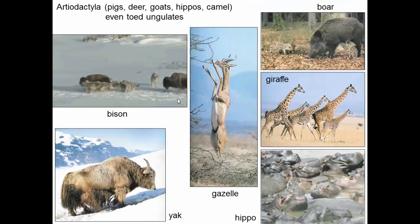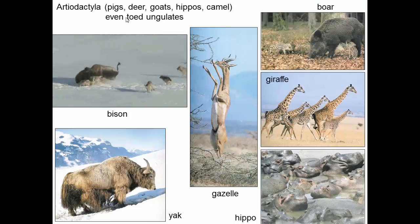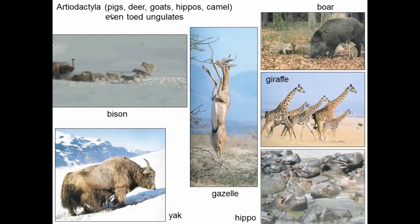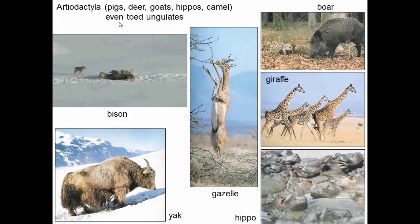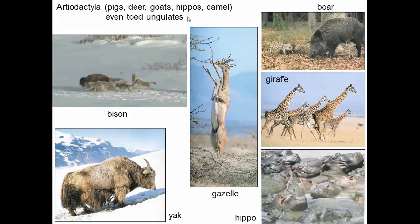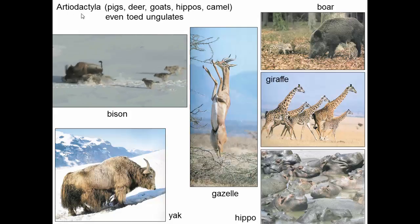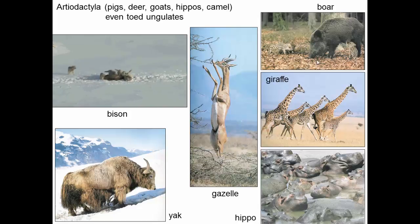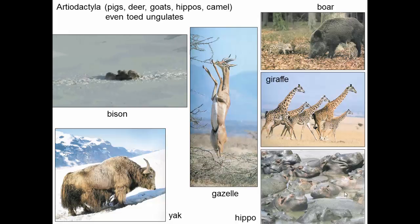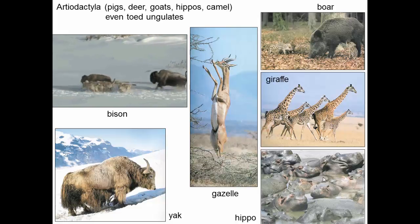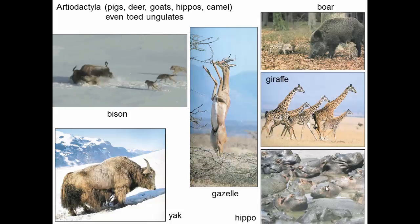The closest relatives of cetaceans are artiodactyls, which include pigs, deer, goats, hippos, and camels — ungulates with an even number of toes. So when you think of hoofed animals, as long as you're not thinking of a horse, rhino, or tapir, you're thinking of an artiodactyl. That includes bison, yaks, gazelles, boars, pigs, giraffes, and hippos.